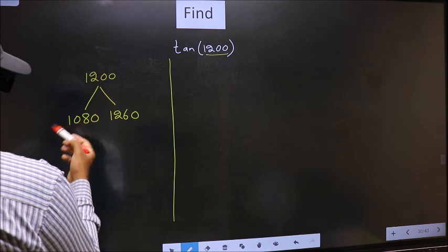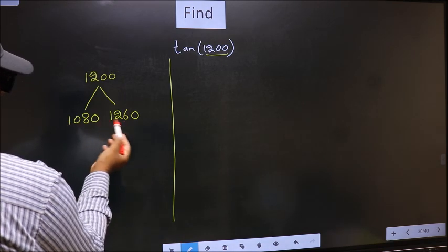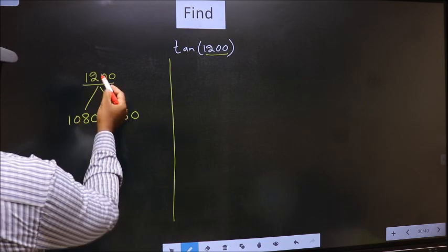This is 180 × 6 and this is 180 × 7. Between these two numbers, 1200 lies.